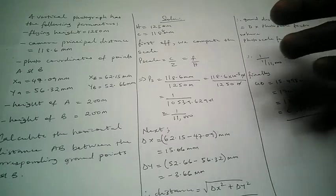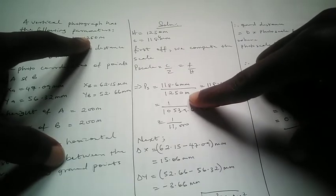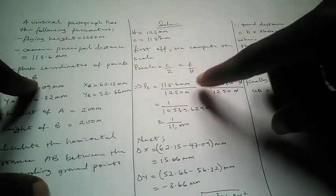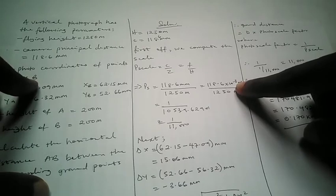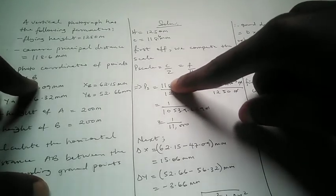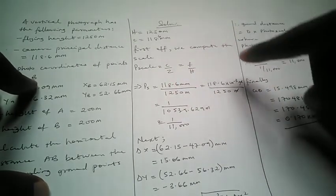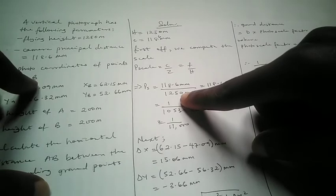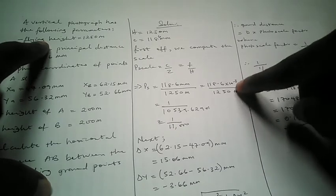Using the principal distance of 118.6 over the flying height of 1250 meters — the units are not the same, so we need uniform units. We convert the numerator from millimeters to meters by multiplying by 10 raised to power minus 3, or dividing by 1000. So 118.6 × 10⁻³ gives the value in meters, and then we divide by the flying height so both units cancel out.